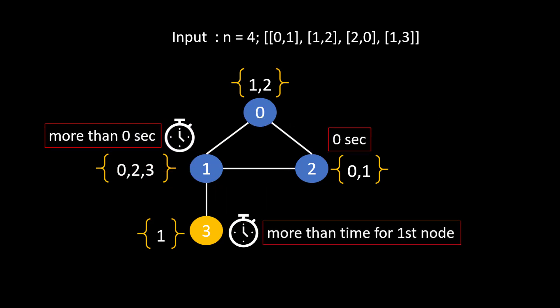If we switch places — start at node 2, run to node 1, the time will be more than 0 seconds, but the time taken to reach node 3 will still be more than the time at the first node. That means no matter the situation, the time at node 3 will always be greater than the time at node 1. That is what makes node 3 a critical connection — there is no way to reach 3 faster; it will always be visited after node 1.